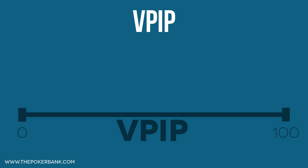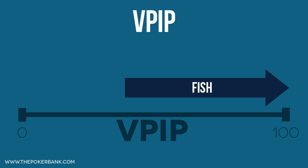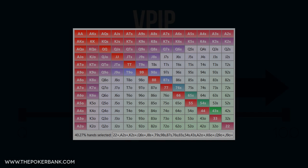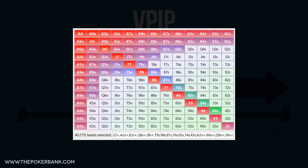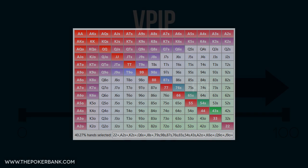If we were to graph VPIP ranging from 0% to 100%, what we would find is most players with very high VPIPs, usually 40% or higher, are going to be fishy players. These players enter too many pots, usually with weak hands, and they are easy to spot with this large VPIP. Here is what 40% of hands look like, and a player who has this many hands in their range is very likely to be fishy.